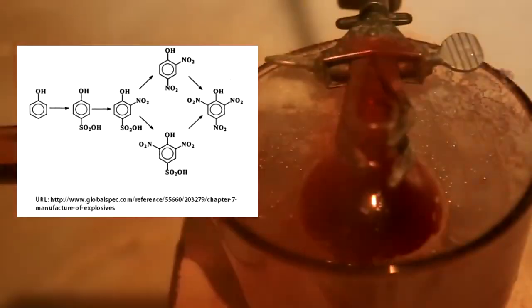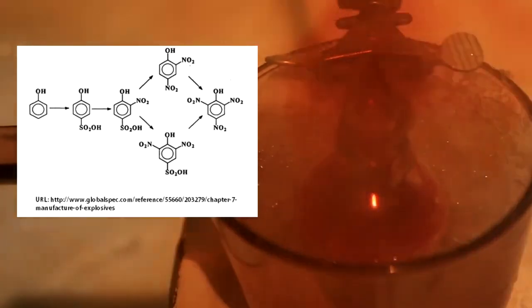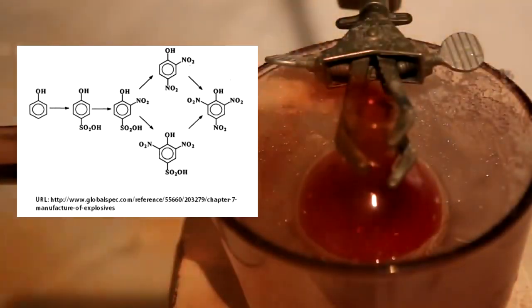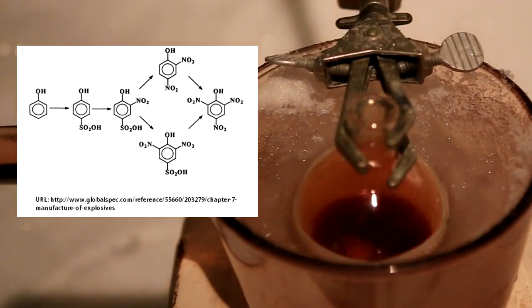Although the reaction appears quite violent and exothermic, it is actually not complete once it dies down. If we isolated our product after this point, we'd have mostly the mono and di-nitrated product, and not as much picric acid. We are going to need to heat up the solution a little bit to get the third nitro group onto the ring.